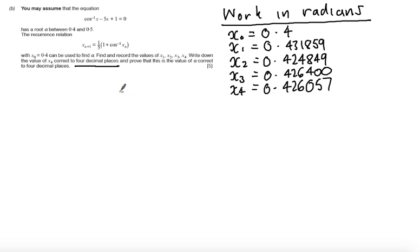So working with this, it says write down the value of x sub 4 correct to four decimal places. So we're taking alpha is equal to x sub 4. Correct to four decimal places is going to be 0.4261 to four decimal places.